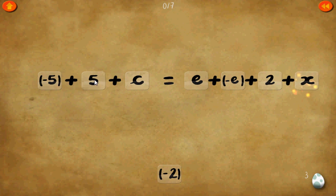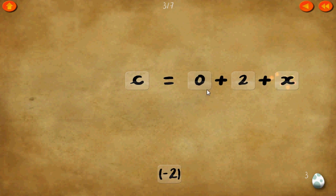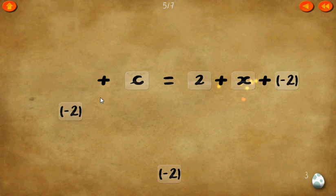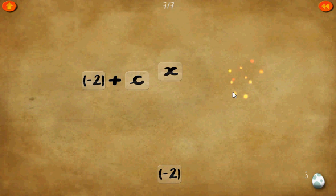Level 3. Negative 5 plus 5 plus c equals e plus negative e plus 2 plus x. Any number plus its negative just cancels out to 0. Same here — any variable plus its negative cancels to 0. We have c equals 2 plus x. If we add a negative 2 on each side, we can cancel those two out as well. Therefore x equals c plus negative 2.